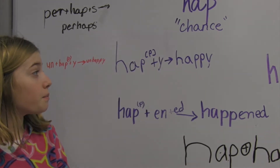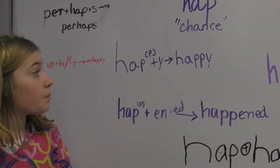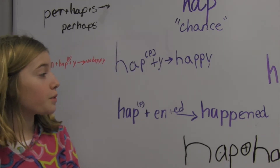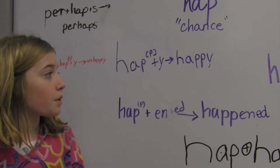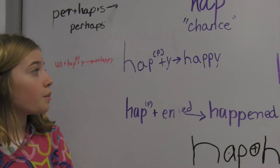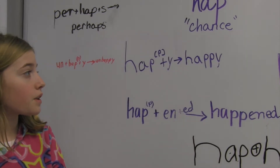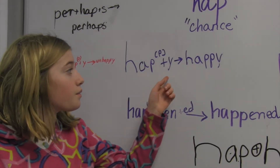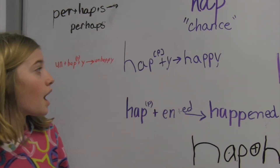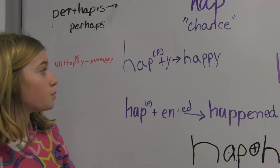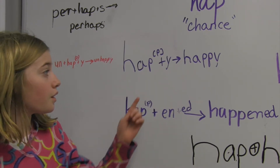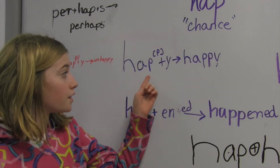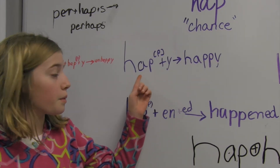Happy! H-A-P plus Y is written as H-A-P double the P-Y. We double the P because the suffix is a vowel and our base is one syllable and there is a final consonant with a vowel before it.